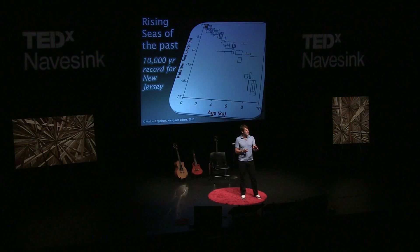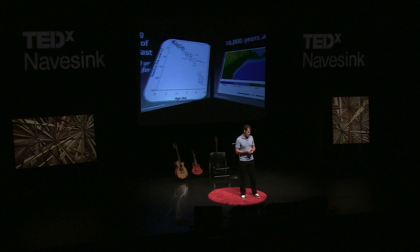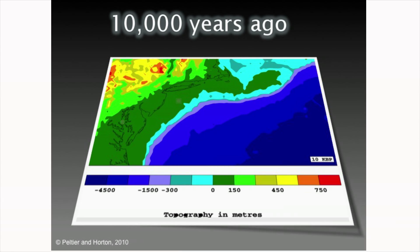I'm now going to show you a series of maps we've produced showing how the coastline has changed through time, at 1,000-year intervals from 10,000 years to the present. To orientate you, the black shows the present-day shoreline — you should be able to see Chesapeake Bay, Delaware Bay, the Jersey Shore, Long Island, and Cape Cod. The boundary between green and turquoise is the coastline at each time point. At 10,000 years ago, because sea levels were 25 meters below present, our shoreline was 100 miles away from where it is today.